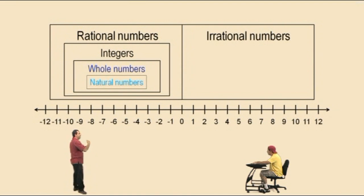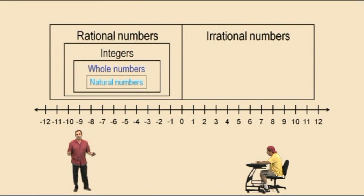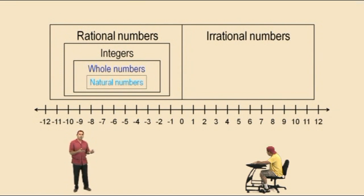Now let's talk a little bit about irrational numbers. Irrational numbers, as I said, are not fractions. They are numbers like square roots — the square root of 2 is an irrational number. How do we know if we're looking at an irrational number or a rational number? We have to look at the decimal representation of the number.